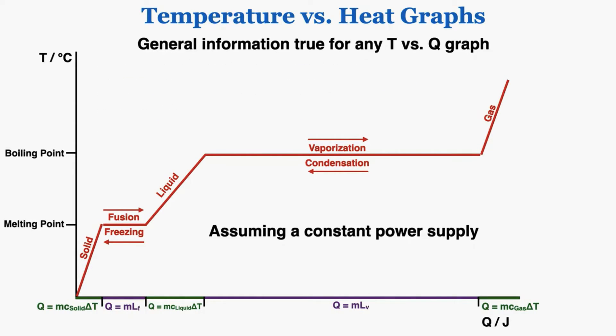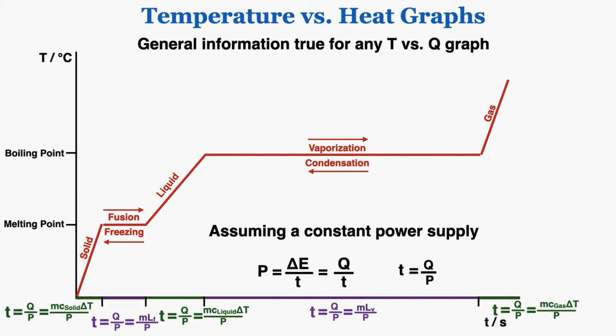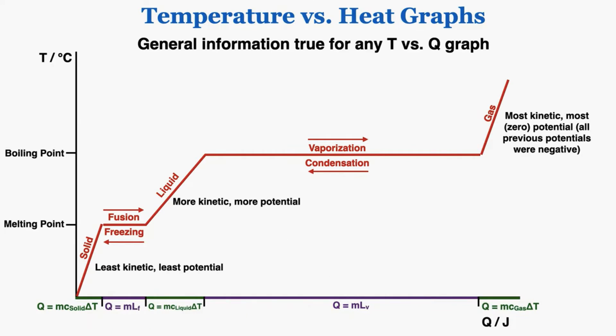If we assume a constant power supply, we can rewrite the heat equations divided by power to find the time for each process. The solid region is where particles have the least kinetic and potential energy; in liquid they have more of both; and in gas they have the most kinetic and most potential energy. Potential energy in a gas is zero — and that's the most because the other phases have negative potential energy.